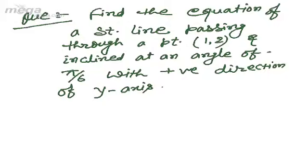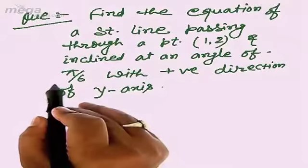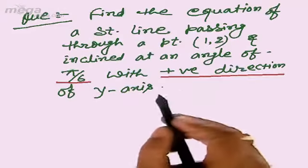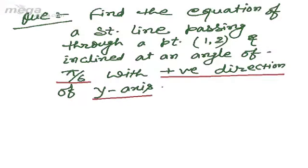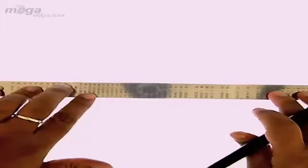First, the inclination of the line is given with positive direction of y-axis, but to get the slope, we need the angle with the positive direction of x-axis. So we will draw the figure to get the angle.